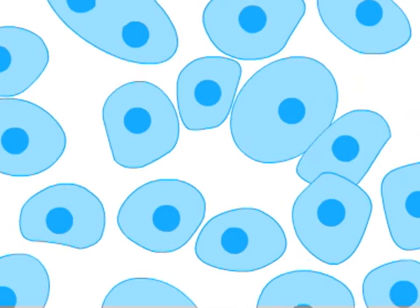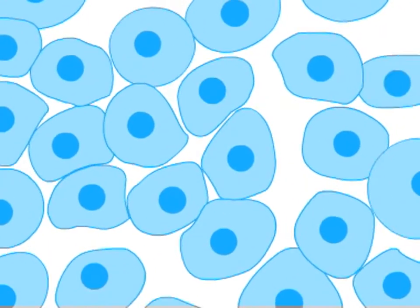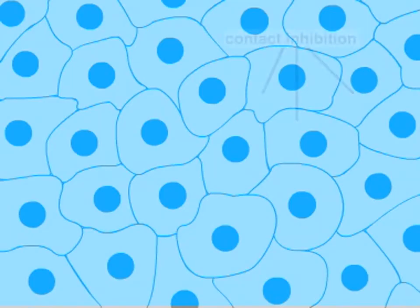As the cells begin to touch one another, they slow their rate of division. This behavior is a consequence of the process called contact inhibition.